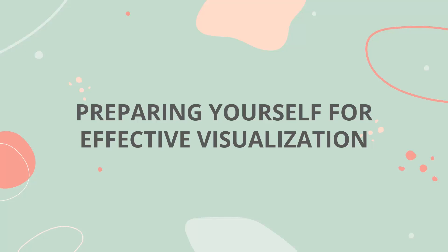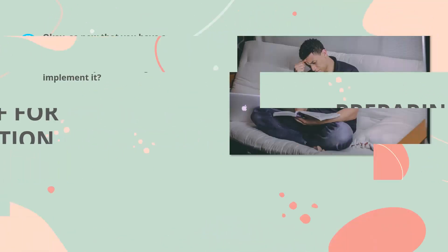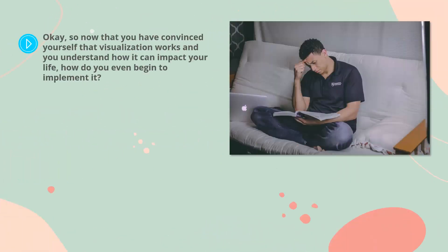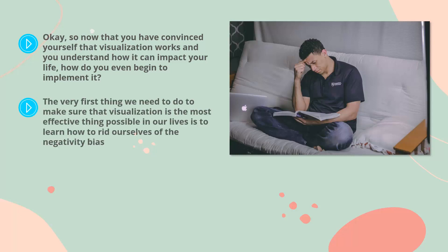Now that you have convinced yourself that visualization works and you understand how it can impact your life, how do you even begin to implement it? Where do we even begin? The very first thing that we need to do to make sure that visualization is the most effective thing possible in our lives is to learn how to rid ourselves of the negativity bias.